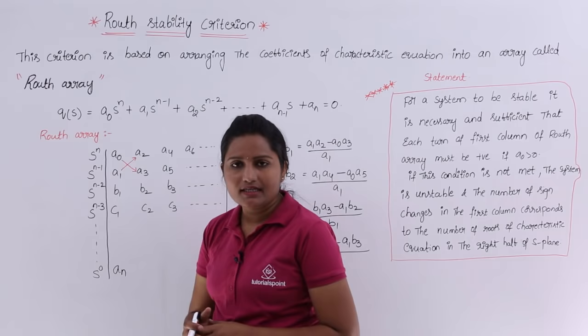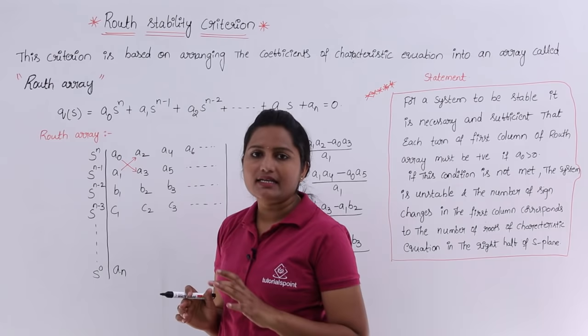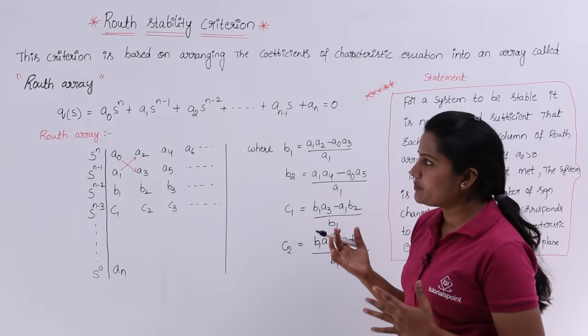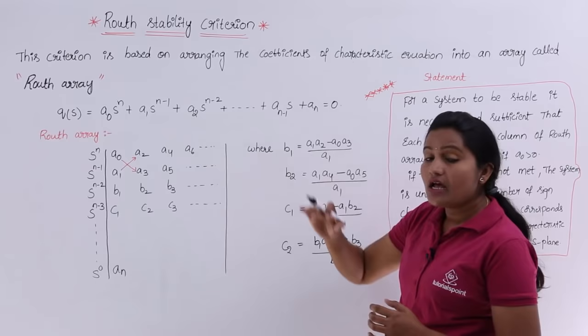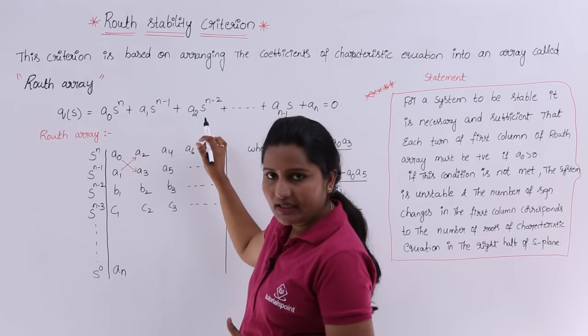For example, if your characteristic equation Q(s) is in this form, that is: a₀sⁿ + a₁sⁿ⁻¹ + a₂sⁿ⁻² + ... + aₙ₋₁s + aₙ = 0, then we need to arrange those coefficients in the first two rows of the Routh array.